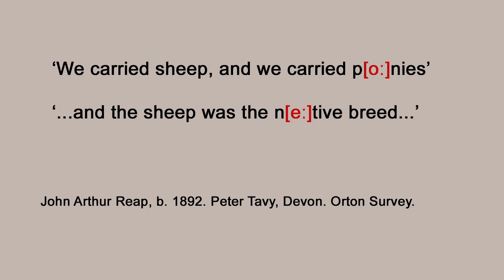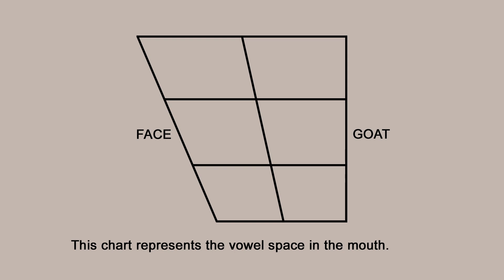These monophthongs normally have qualities something like 'face' or 'goat', or sometimes the slightly lower versions. The face vowel is at the front of the mouth and the goat vowel is at the back, but the tongue is at the same height for both — and that front-back symmetry in vowel inventories is a really strong pattern in modern languages, no matter whether it's English or another language.